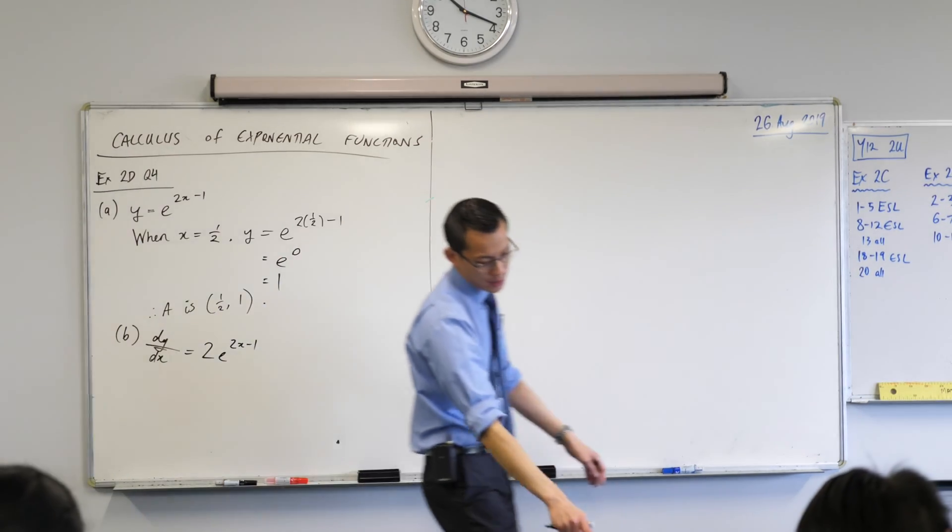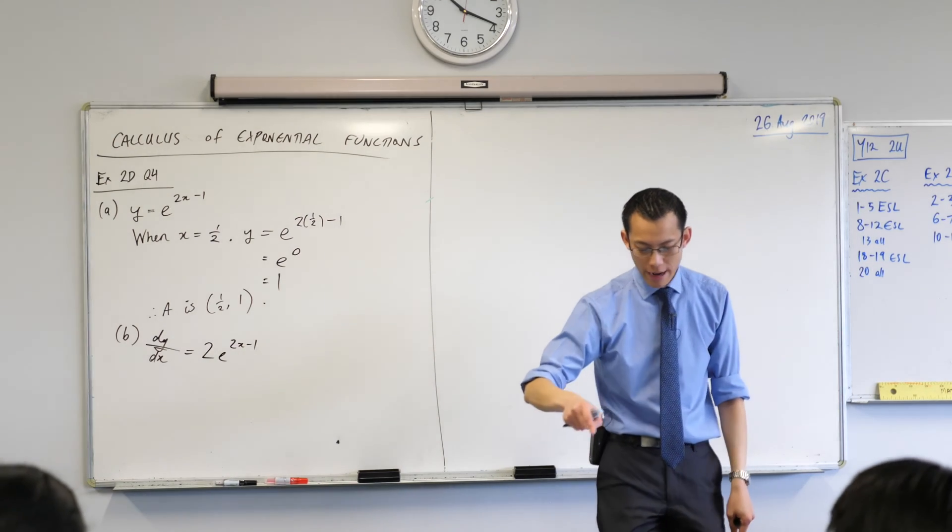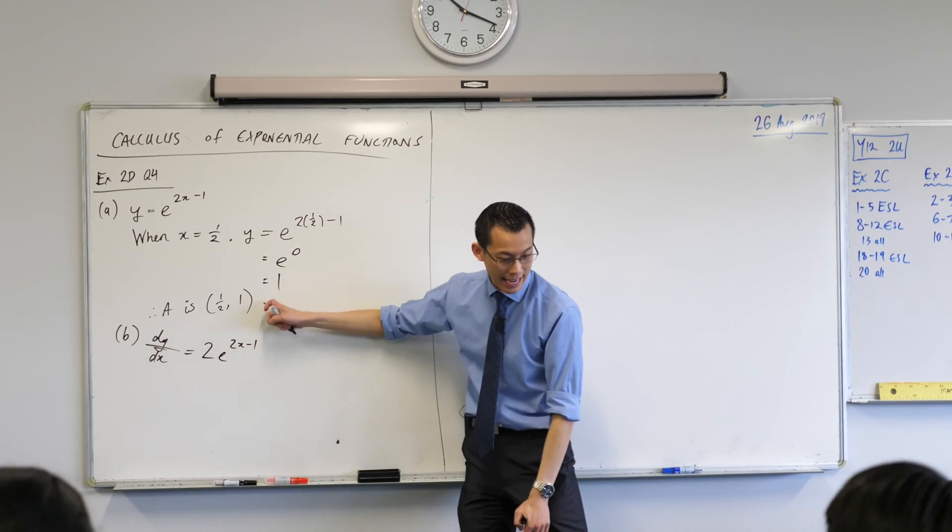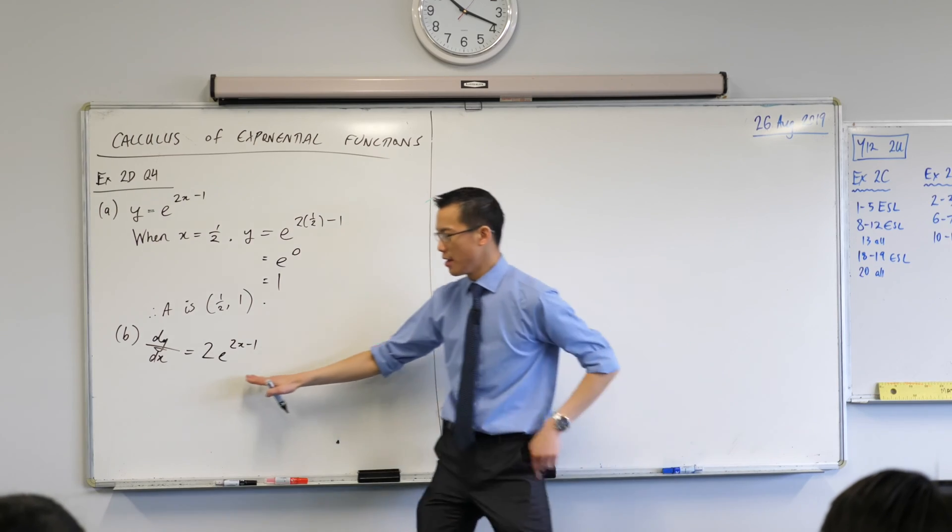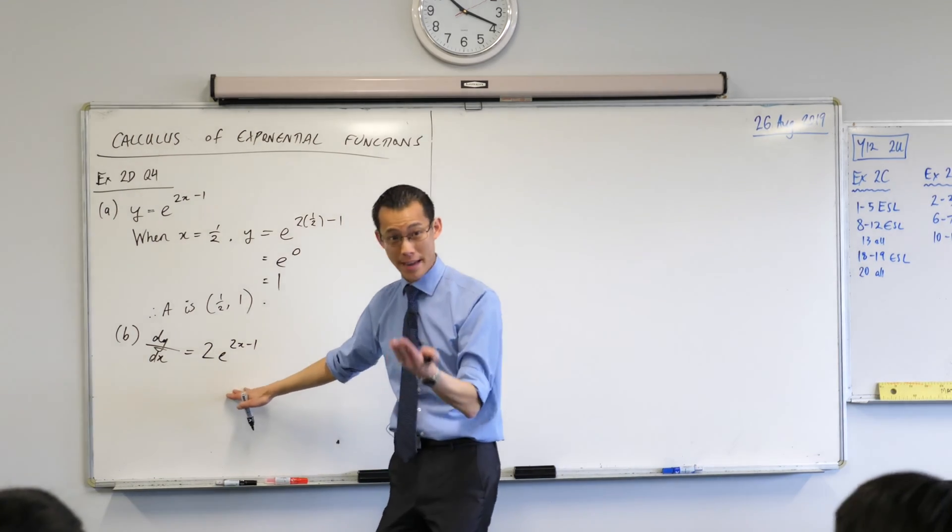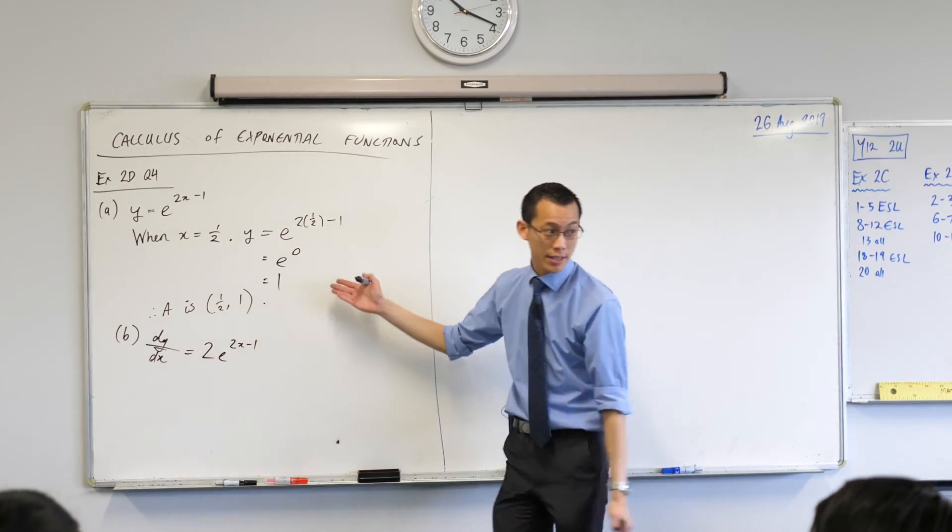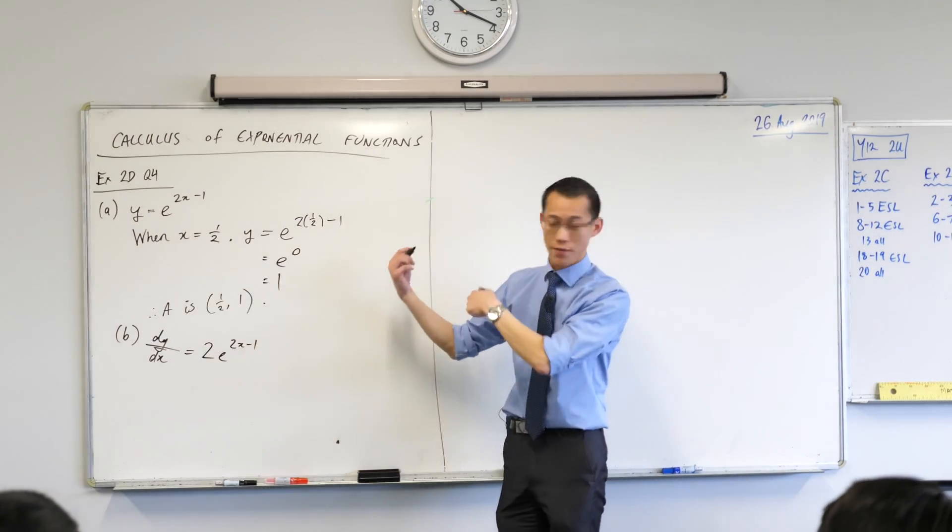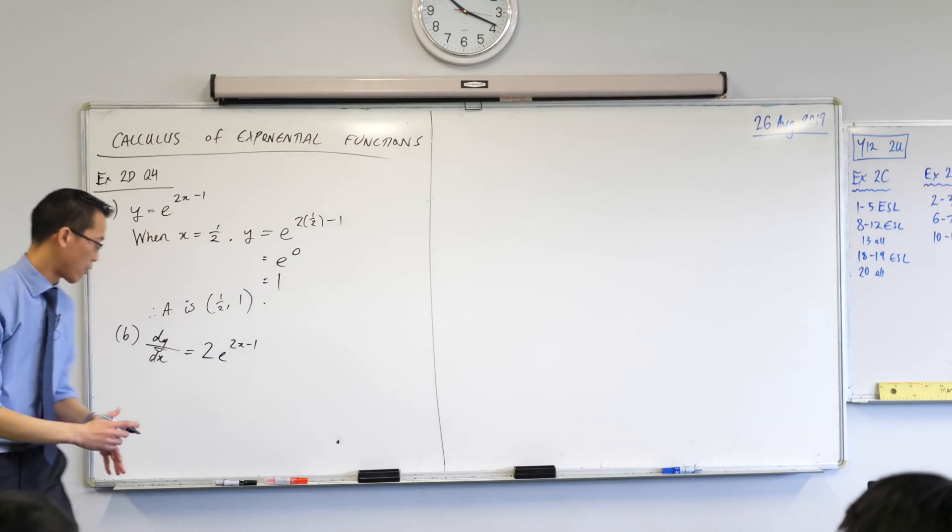And now, Frank's question, it says show that the gradient of the tangent at A is 2. So in other words, this will give me the gradient if I substitute in an appropriate x value. And the x value that I want in this case is a half, what I got from the previous part. So again, I'm going to set that out.